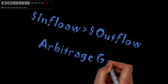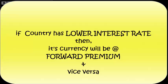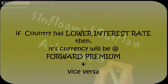When the dollar borrowing rate is 5% and the rupee rate is 10%, the dollar's interest rate is lower but its forward exchange rate is higher relative to the rupee. This is because the country with the lower interest rate will have its currency at a premium, while the country with the higher interest rate will have its currency at a discount. Due to interest rate parity, this arbitrage opportunity is eliminated.